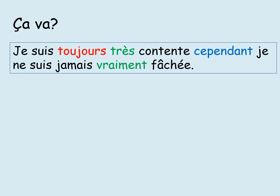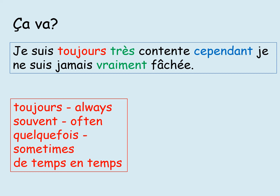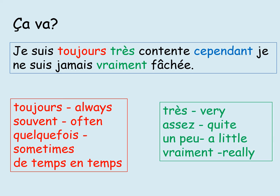There's one final step to our extending of our sentence. I've now written je suis toujours très contente, cependant, je ne suis jamais vraiment fâché. What have I included that's new this time? We've included intensifiers, which are in the green. By extending our sentence, we've used adverbs and those intensifiers. I've got très — very, assez — quite, un peu — a little, and vraiment — really. Well done if you've added more than me.